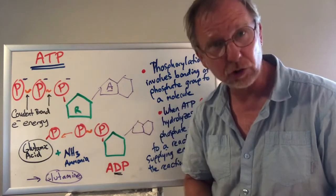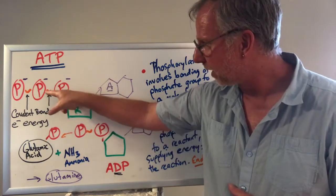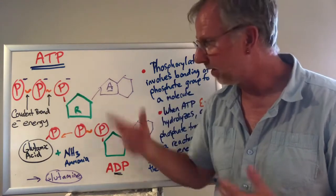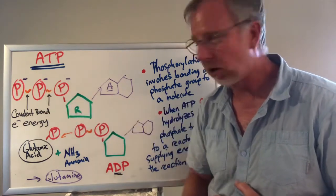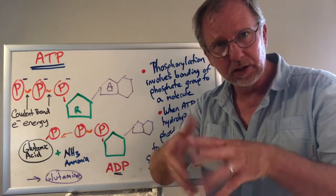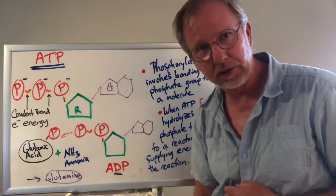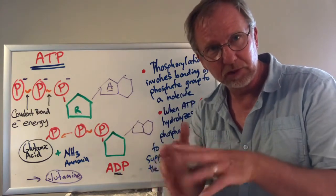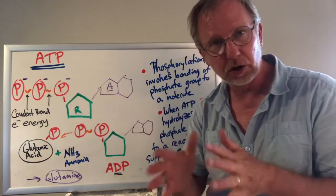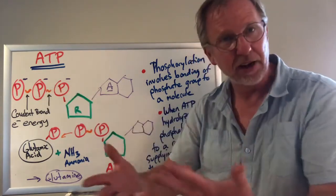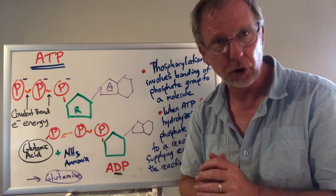I drew those bonds as wavy lines rather than straight lines. That's done in chemistry to show bonds that are weak, unstable, and ready to break. The covalent bonds between the phosphate groups are very unstable and ready to break, which is a good thing for cells — it means those bonds break easily and give up that energy easily. That's why ATP is used by all cells on Earth.